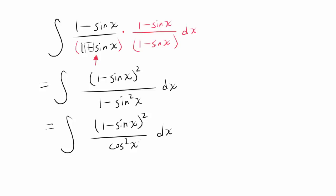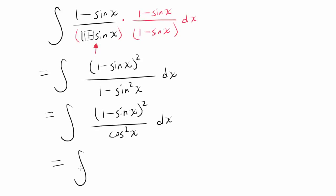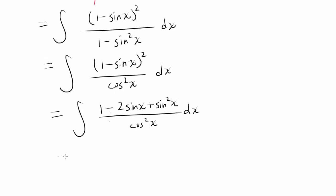Now that we don't have this plus sign, we can attempt dividing each of the elements in the numerator by cosine squared of x. Let me start by expanding the top: (1 minus 2 sine of x plus sine squared of x), divided by cosine squared of x dx. Notice that instead of (1 plus sine of x), now we just have cosine squared of x, so dividing will simplify much more nicely.